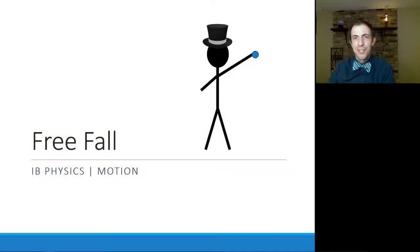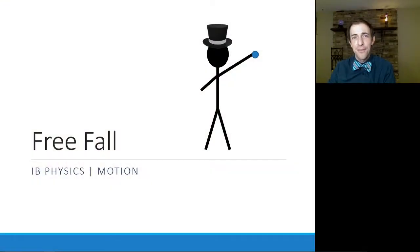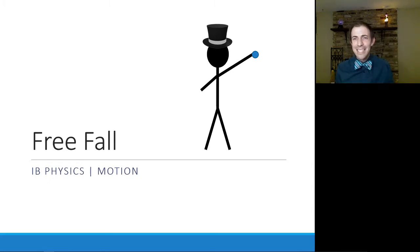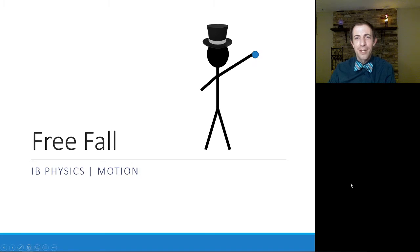Today we're going to focus specifically on one primary form of accelerating motion, and that is freefall — something that you are probably pretty familiar with. If you drop something or throw something, you have seen freefall in action. It is when an object accelerates downward due to gravity.